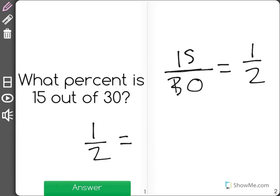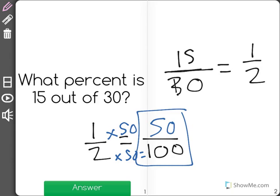I know that when I'm talking of percents, I'm talking out of 100. So 1 out of 2 is equal to what out of 100? In order to get to 100, I have to multiply 2 times 50, which means I would do the same on the top to get a total of 50 out of 100.